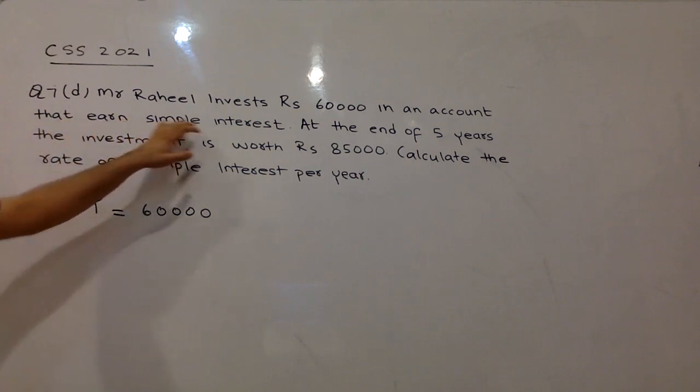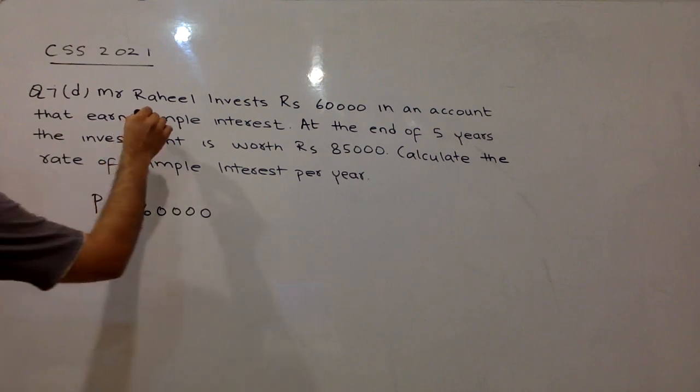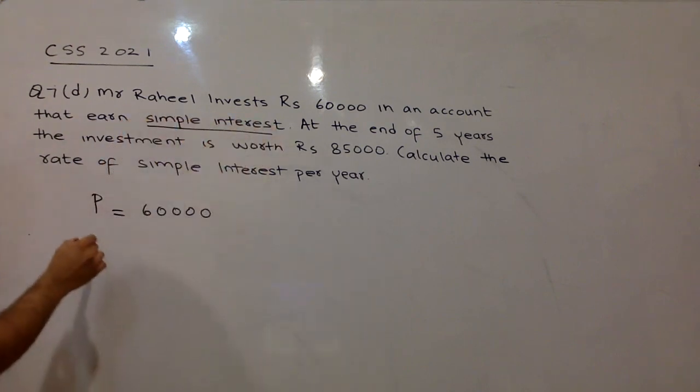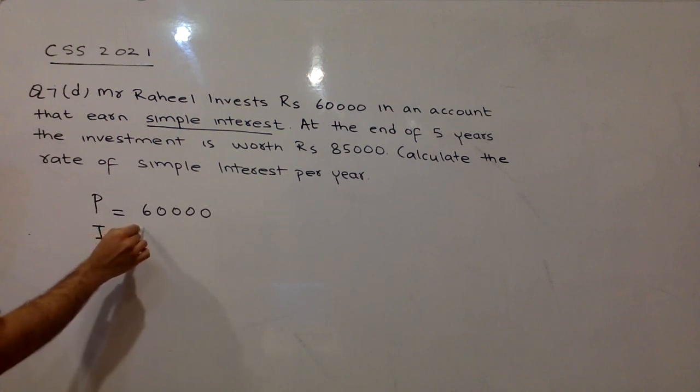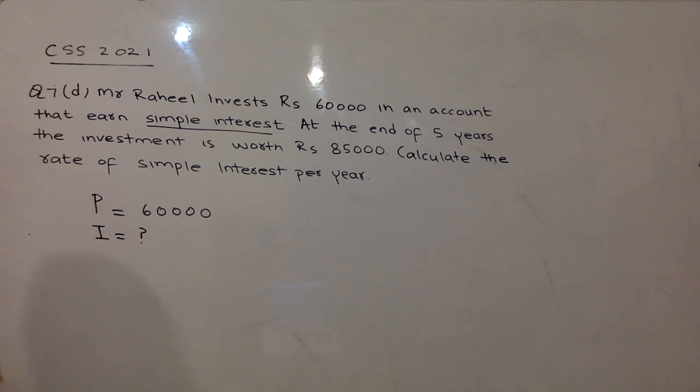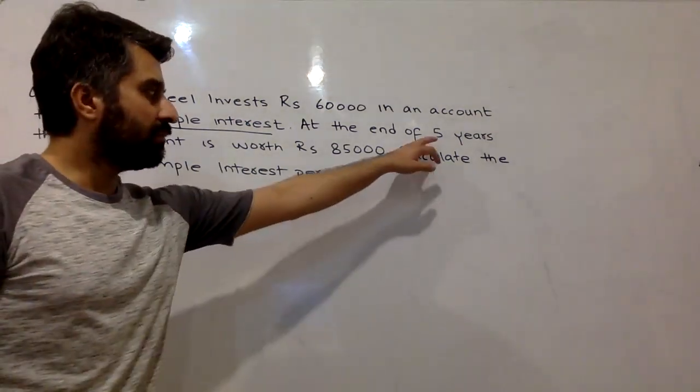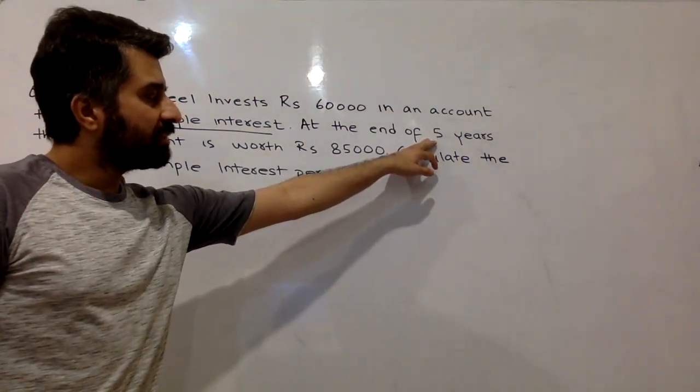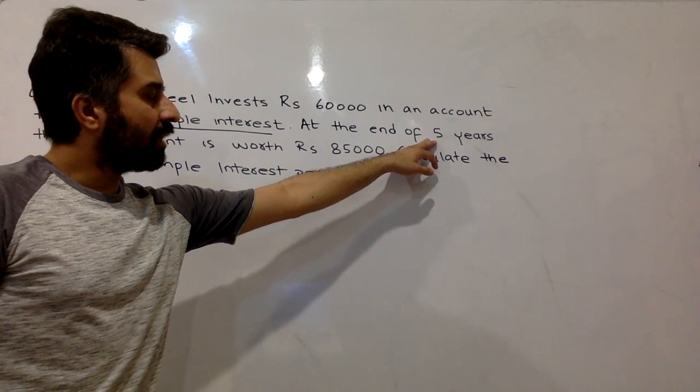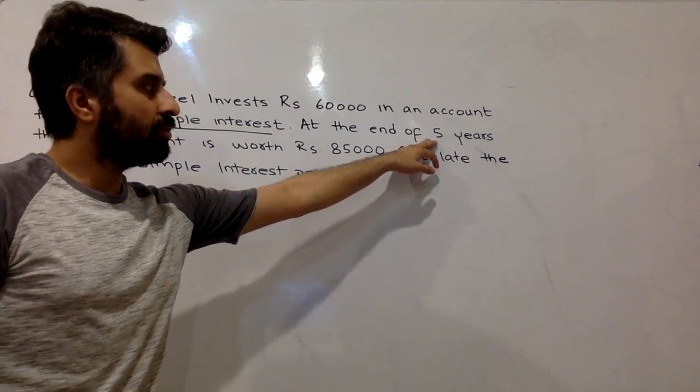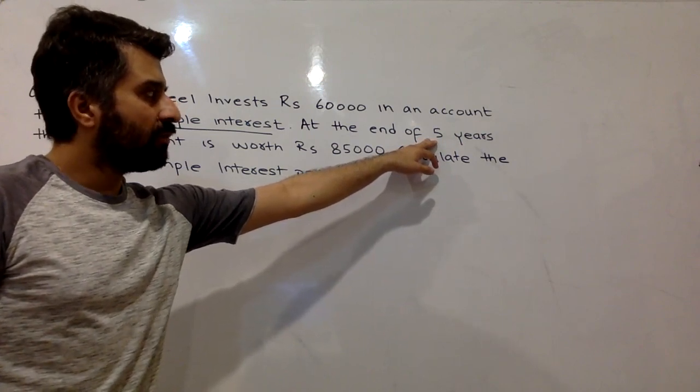That earns simple interest. Okay, we have been told that this is simple interest. Because simple interest or compound interest, in the cases, we have a formula different. How much interest will we get? We will talk about the time. At the end of 5 years. So, time duration is important. The investment in the account of the bank, the time spent was 5 years.